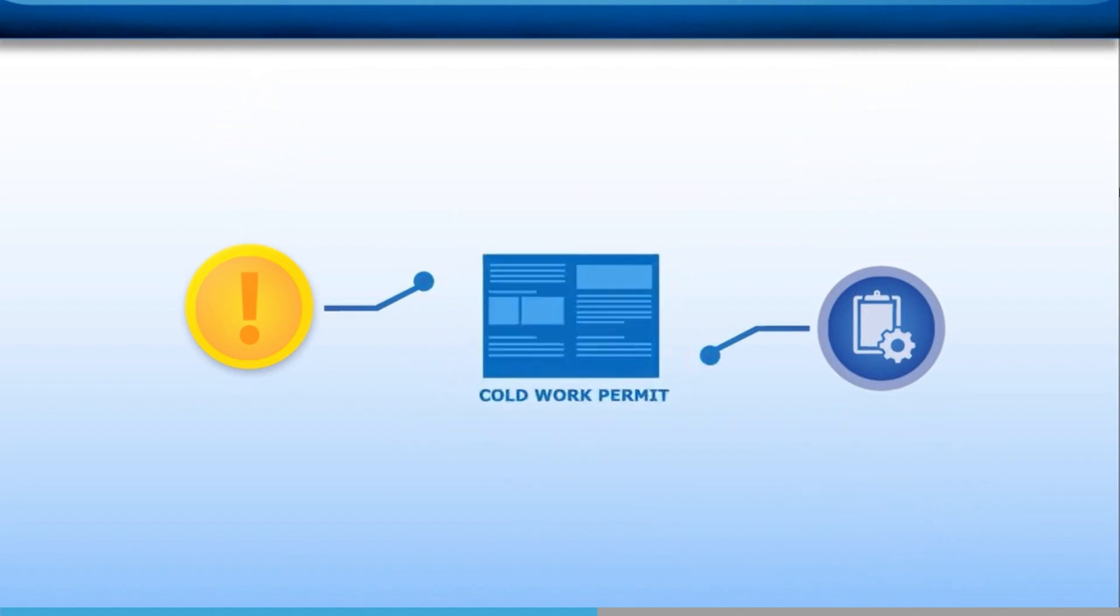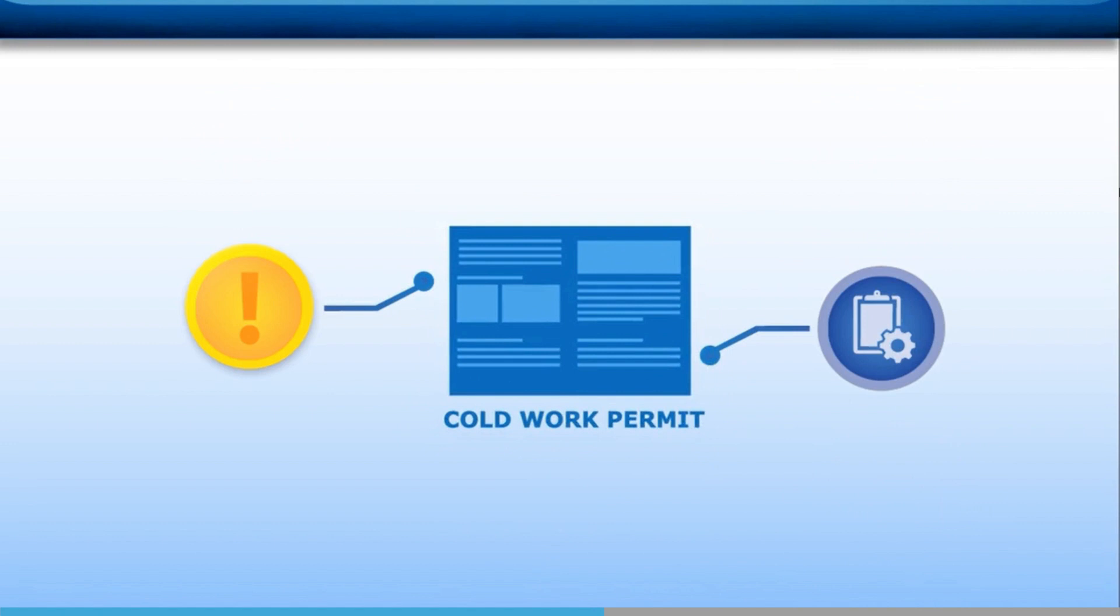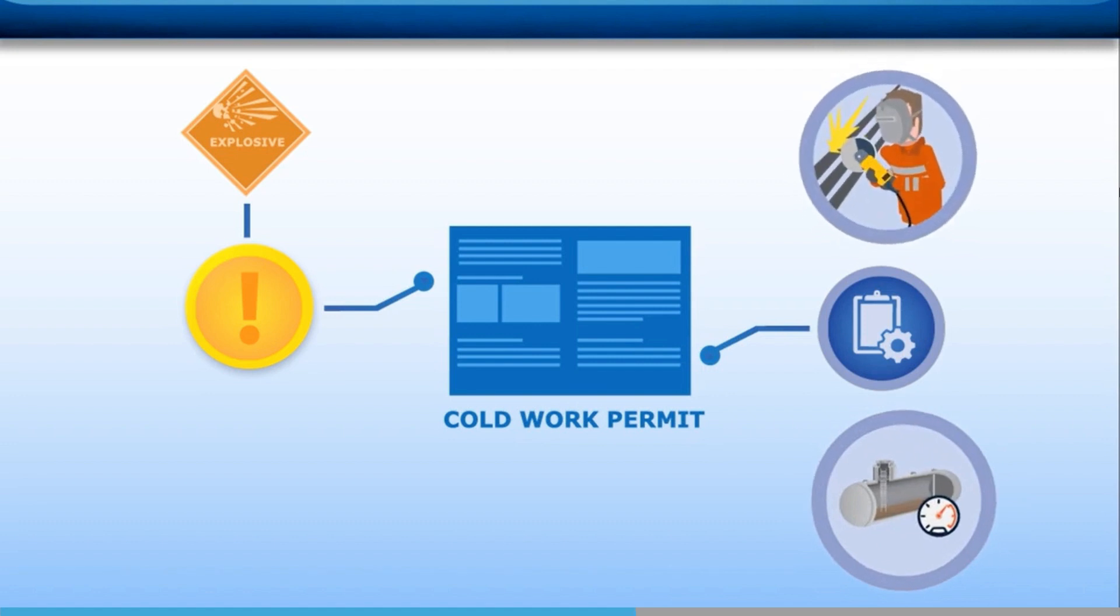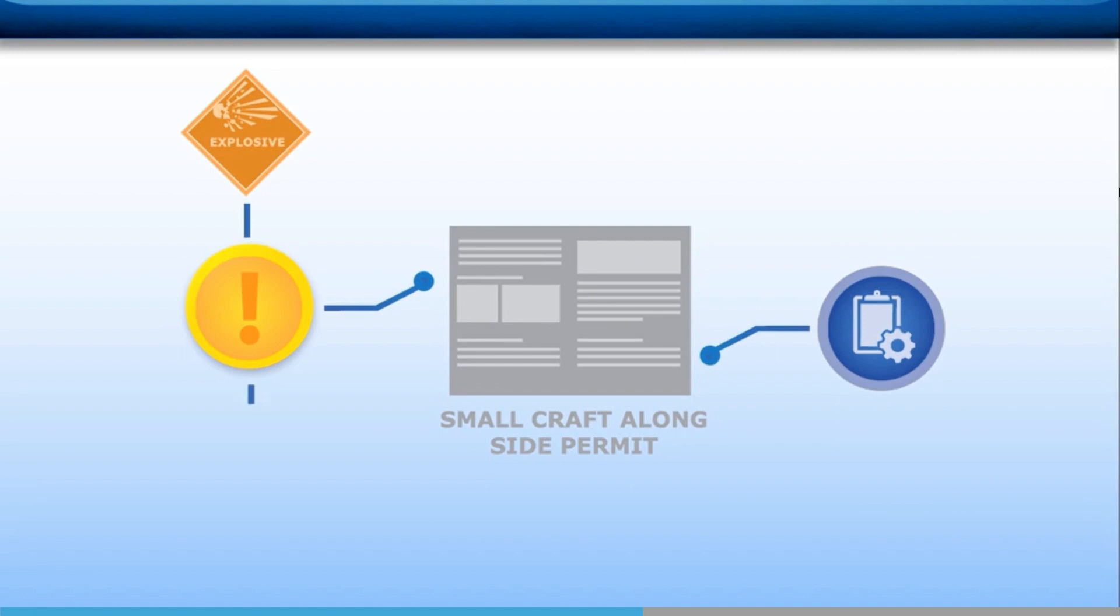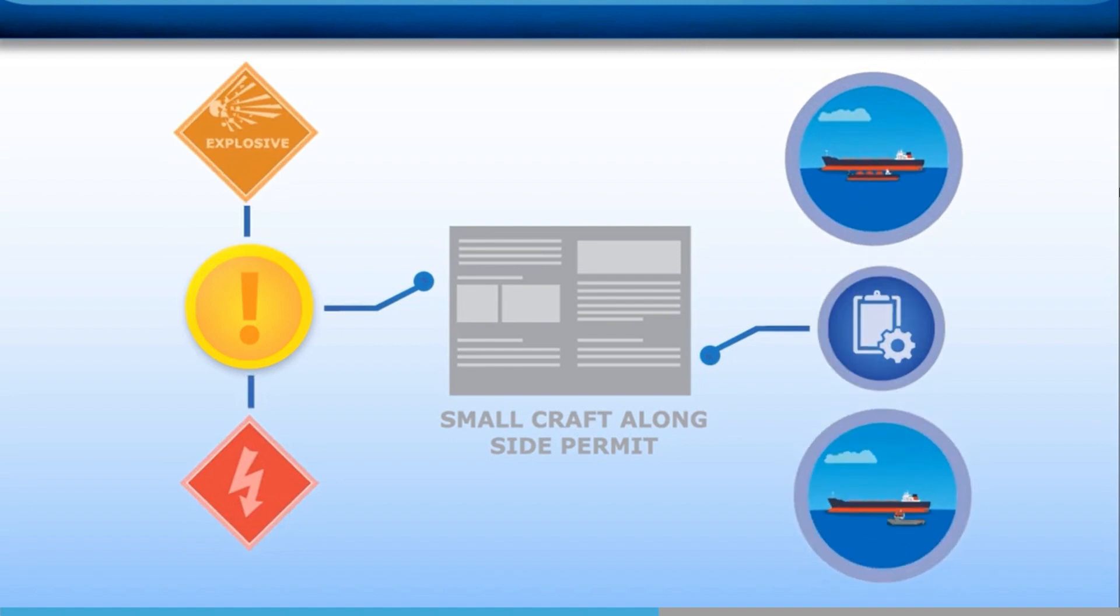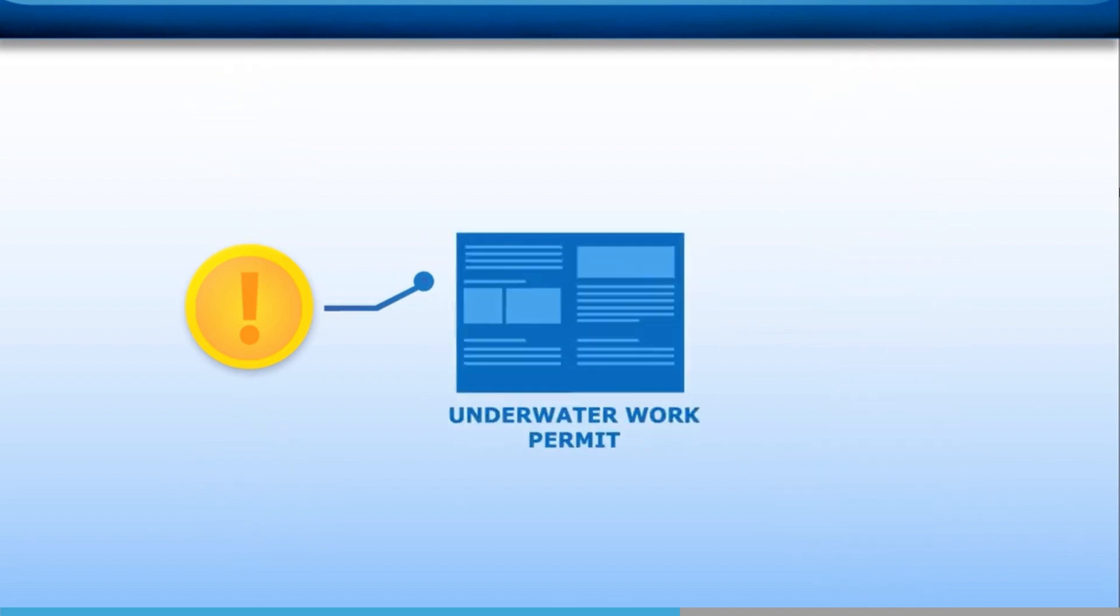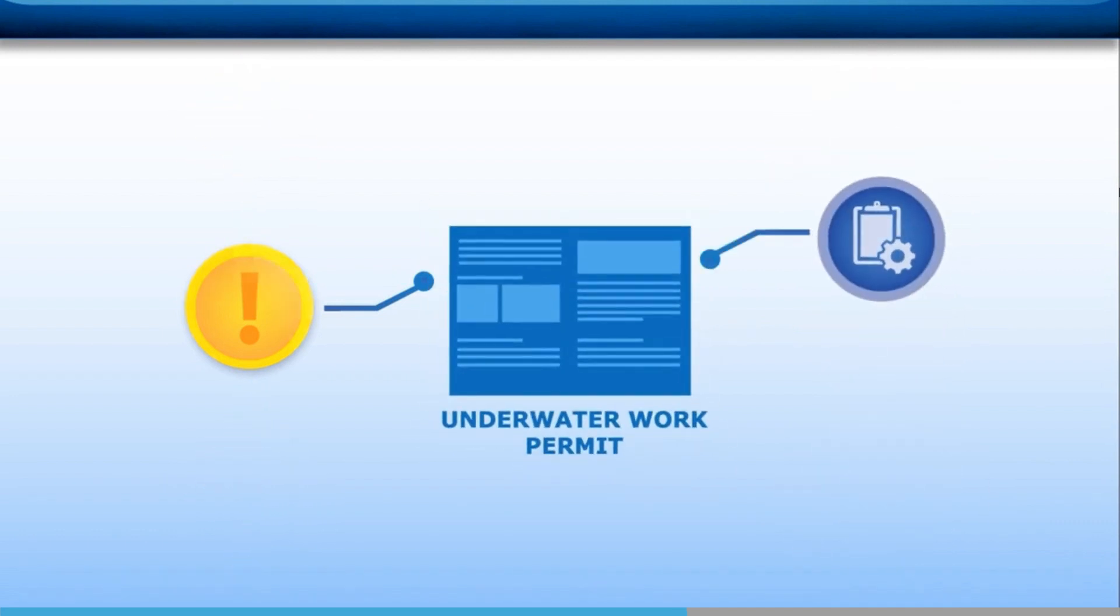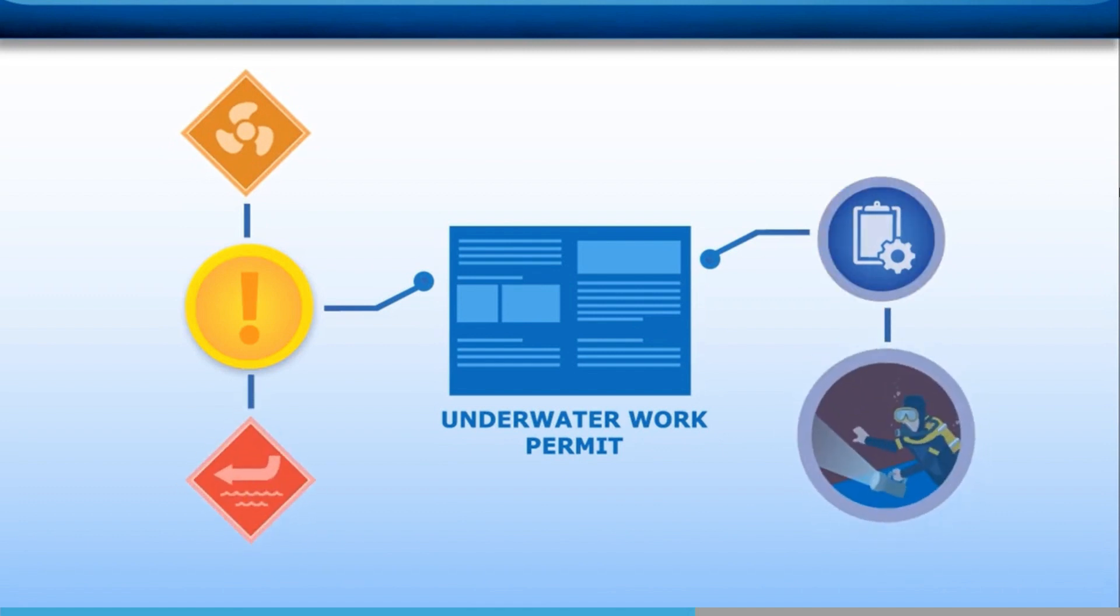A cold work permit should be issued for non-routine mechanical work, where the work could cause an explosion if there is an unexpected gas present. But a cold work permit also covers other work, such as opening up a previously pressurised container. Small craft alongside permits should be issued with jobs involving the risk of static electricity or sparks, either of which may cause an explosion. Examples are securing a bunker barge or other small boats coming alongside. Underwater work permits should be issued when tasks involve the risk of a diver being injured by the propeller or the sea intakes, as may happen during a diver inspection.